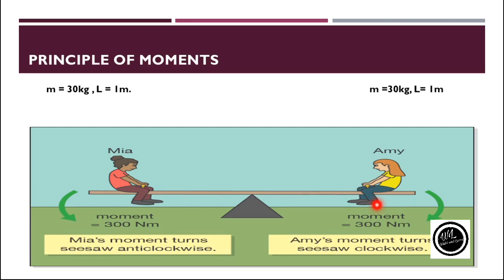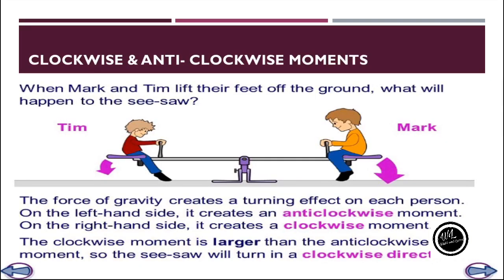But these torques will be opposite in direction. One side will produce a turning effect in the clockwise direction and the other will produce a turning effect in the anticlockwise direction. The force which produces a torque in the clockwise direction is known as the clockwise moment, or clockwise moment of force, and the force which produces a turning effect in the anticlockwise direction is known as the anticlockwise moment.